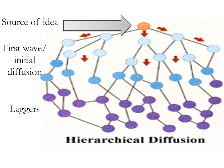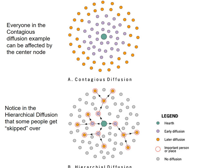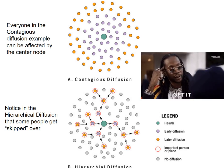Hierarchical diffusion is a little different. Up here you have the source of the idea, and here you have the first wave of initial diffusion — the people that buy in right away. Then you have the people, the laggers, that take a while before they receive the idea. The source could be TikTok, the first wave is Gen Z users, and the laggers are older people who come on later. Now comparing contagious and hierarchical: in contagious diffusion, everybody can be affected by the center node, but hierarchical diffusion skips people — and understanding what makes them unique is absolutely critical.